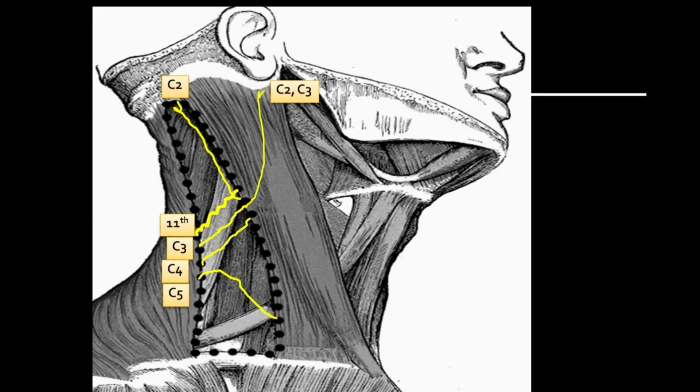This one is the greater auricular nerve, C2-C3, which supplies the skin around the angle of the mandible. This one is the transverse cervical nerve, root value C2-C3, and it supplies the skin of the front and side of the neck.